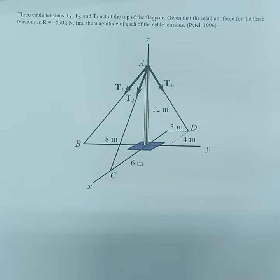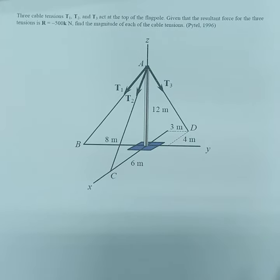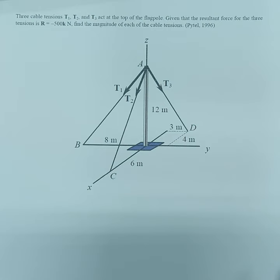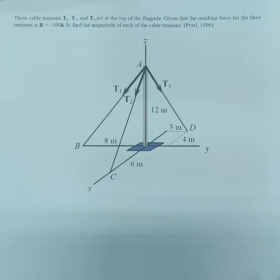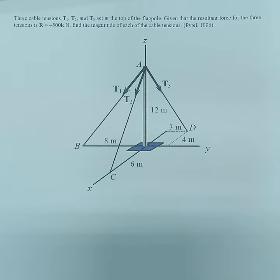Let's have another example on solving for the resultant of concurrent forces in three dimensions. This will perhaps be the last for this particular topic. We have three cables with three cable tensions T1, T2, and T3 at the top of the flagpole. Given that the resultant force for the three tensions is negative 500k newtons, find the magnitude of each of the cable tensions.